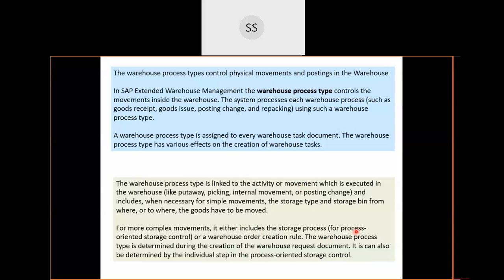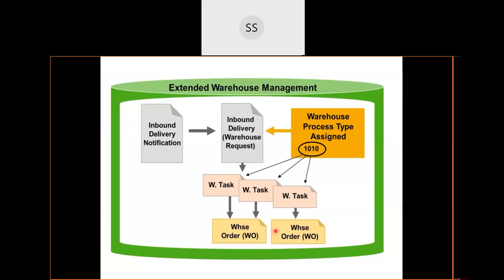The warehouse process type is linked to the activity/movement direction and may have a storage process field for process-oriented storage control, plus a warehouse order creation rule field. The EWM inbound delivery is also called a 'warehouse request' from the warehouse perspective. For the warehouse request, a warehouse process type is determined and assigned.